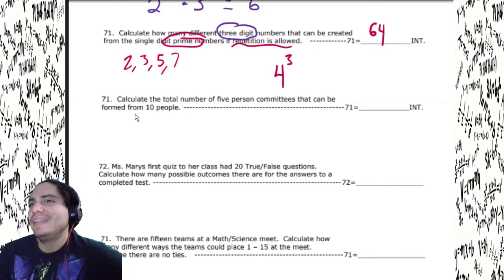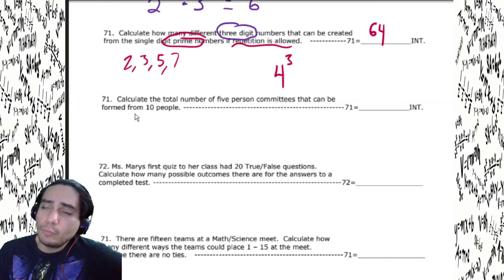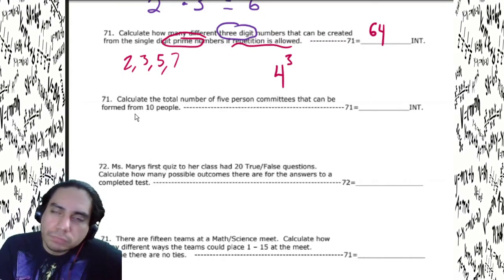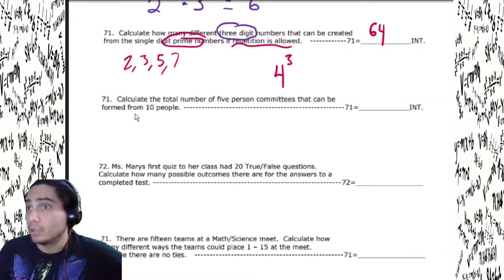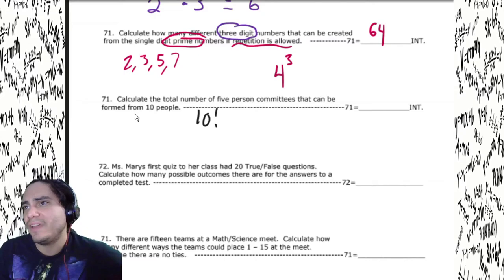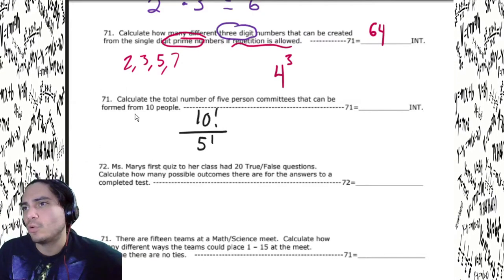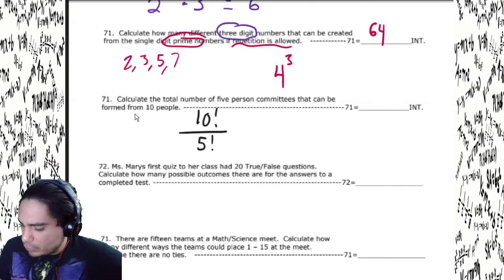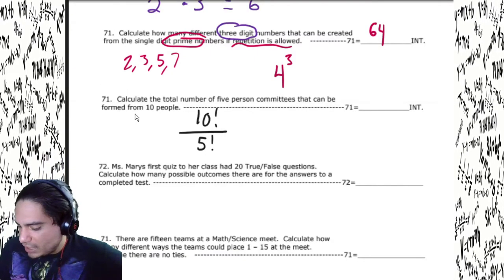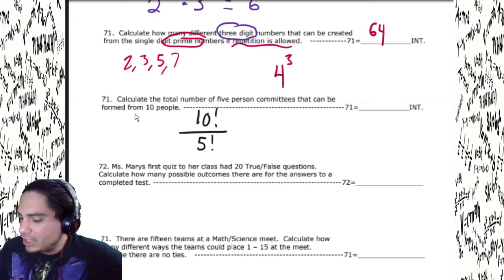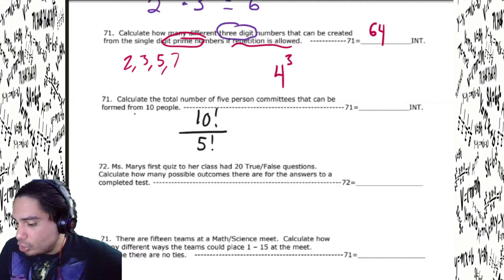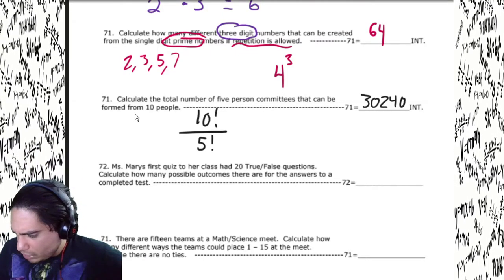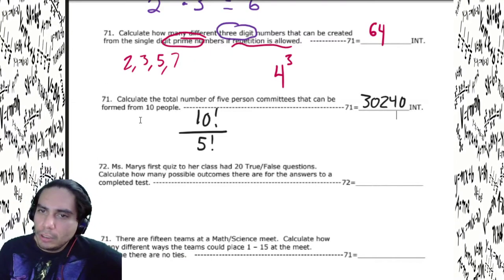Calculate the total number of five-person committees that can be formed from ten people. Order doesn't matter — you're making groups, and nobody has different jobs. So it's 10! / (5! × 5!) — that's 10 factorial over 5 factorial (since 10 − 5 = 5). Hit the vibe — it's an integer problem — and we get 252.